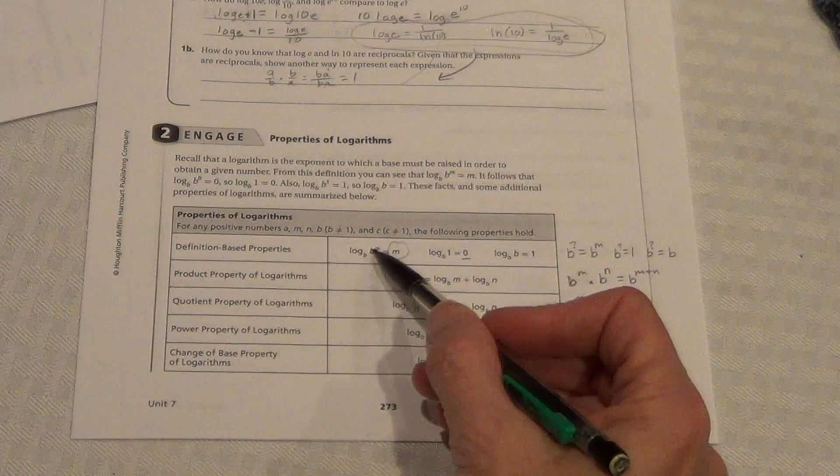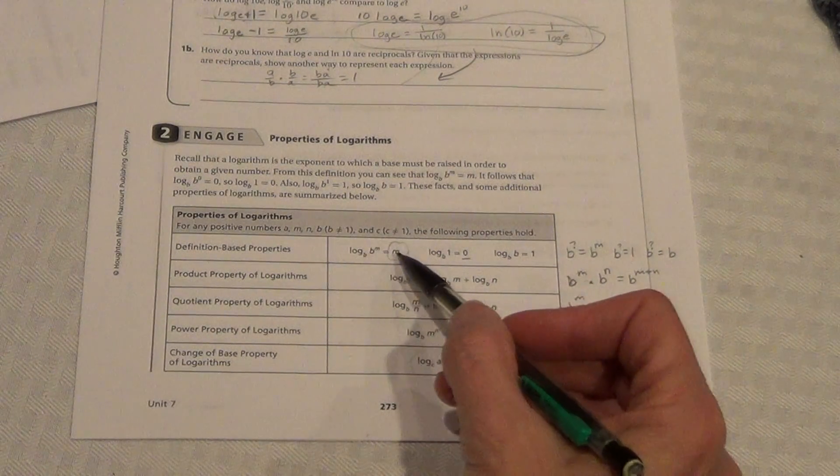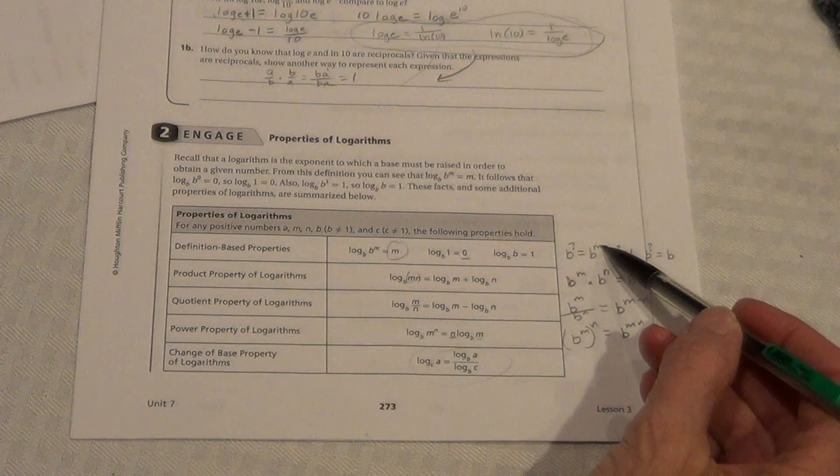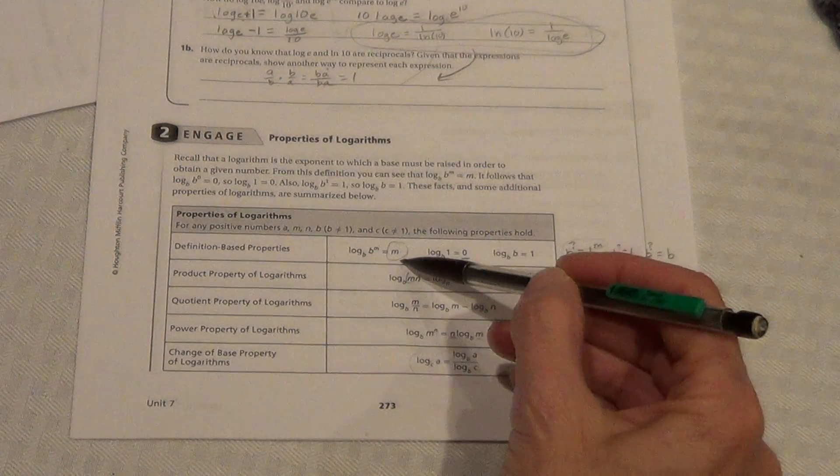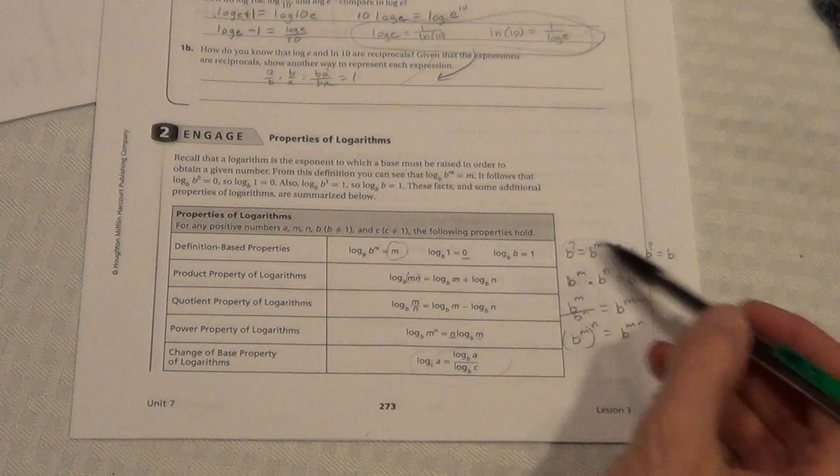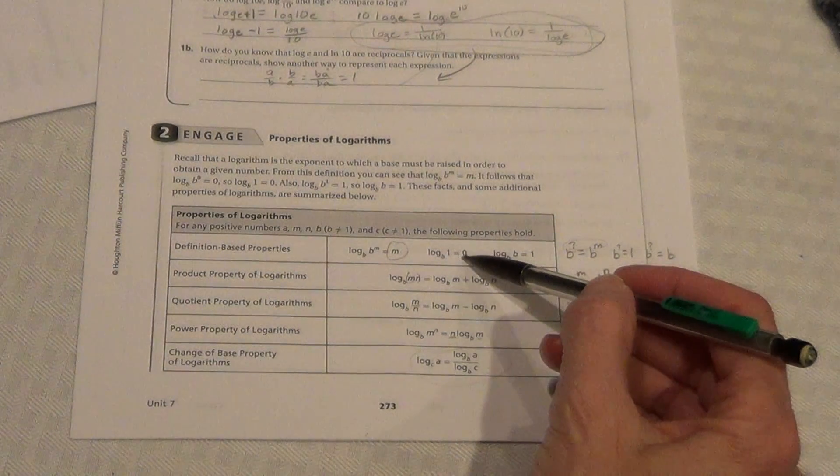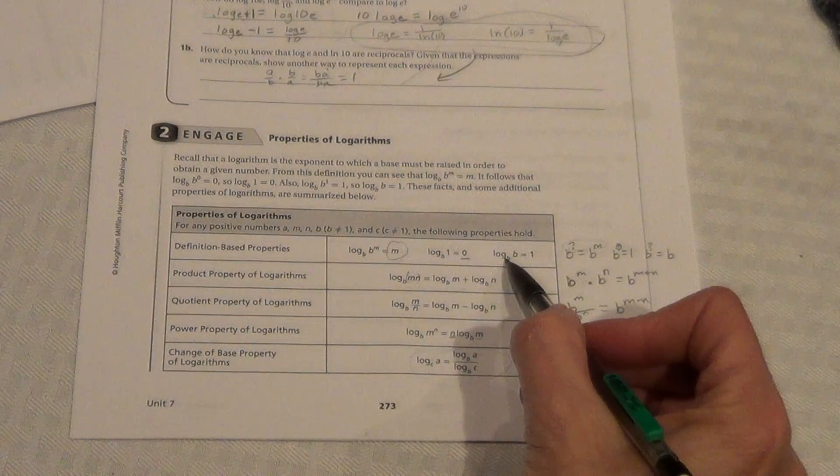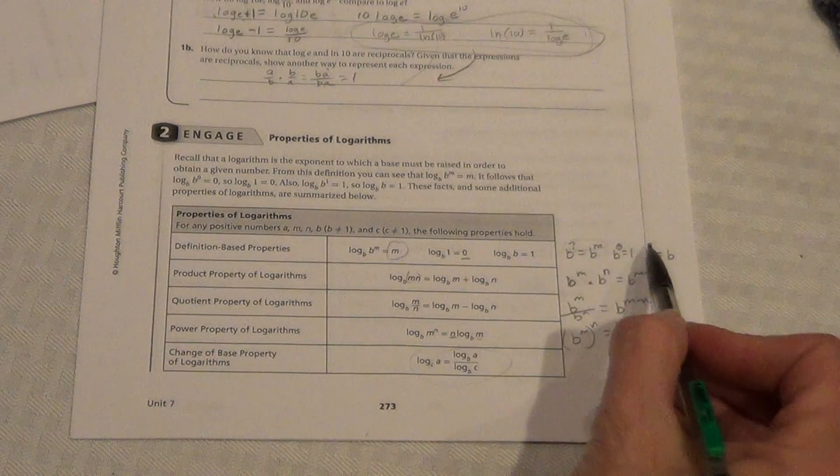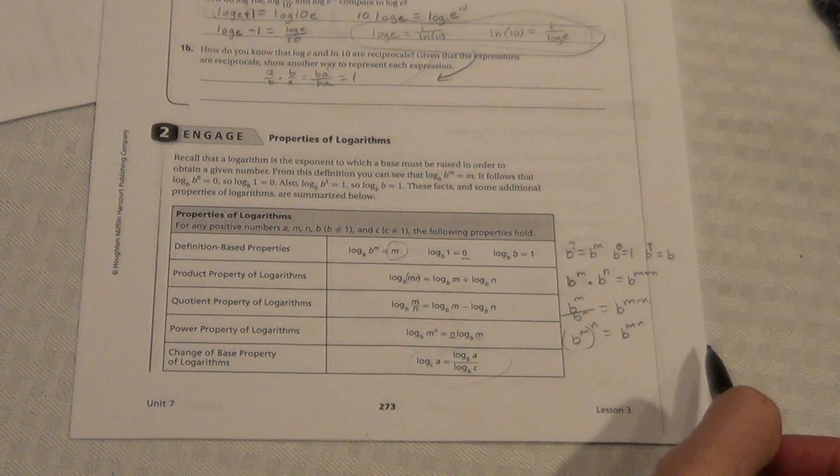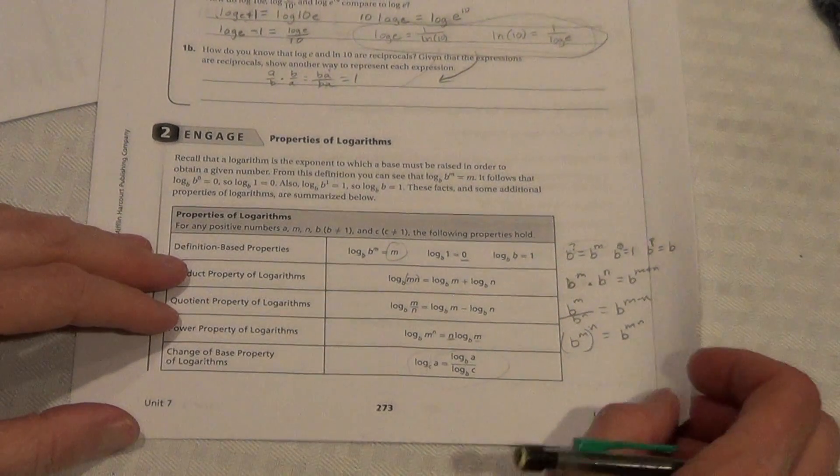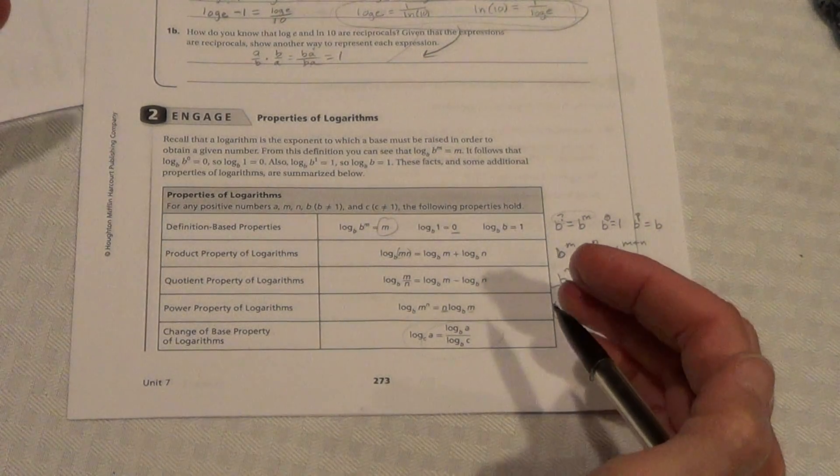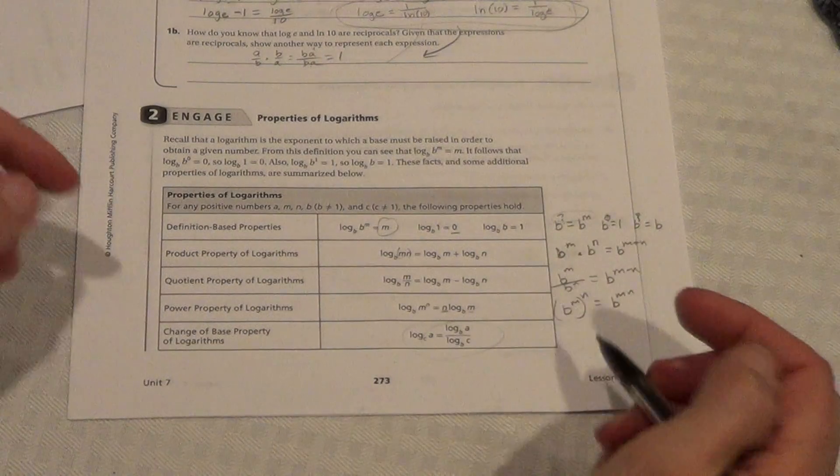Log base b of b^m equals m. What you're basically saying there is, what power of b is equal to b to the m? So, it would be m is your answer. Here, we're saying b to the zeroth power equals 1. b to the first power equals b. Make sure you come in and work with me if you're struggling with these flip-flops. Really, a logarithm answers what power on the exponent.